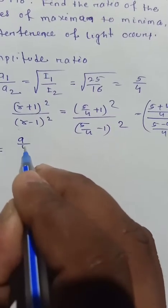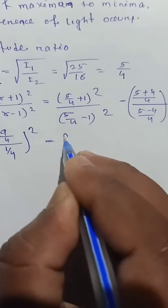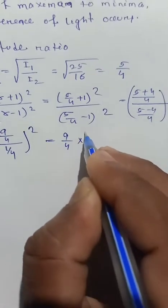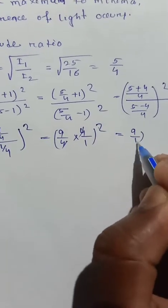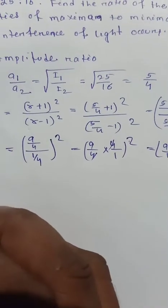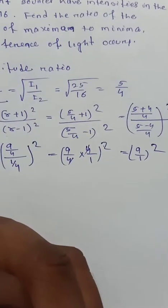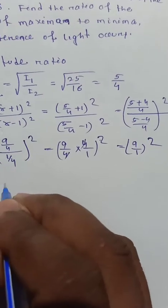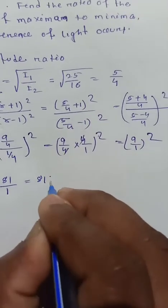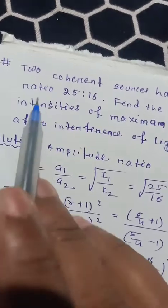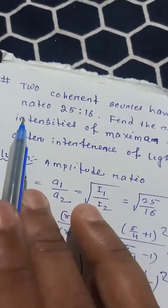This gives us (9/4) divided by (1/4) whole square. So 9/4 multiplied by 4/1 — the 4s cancel — giving 9 by 1 whole square, which means the maximum intensity to minimum intensity ratio is 9 squared to 1 squared, that is 81 to 1.